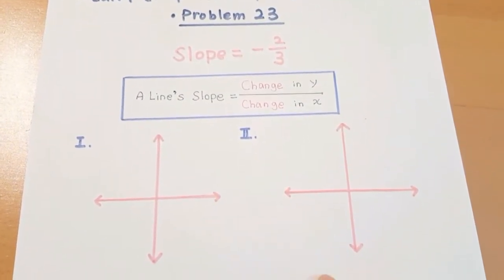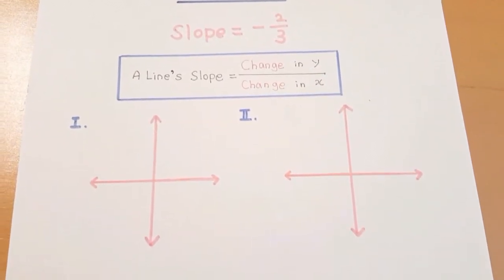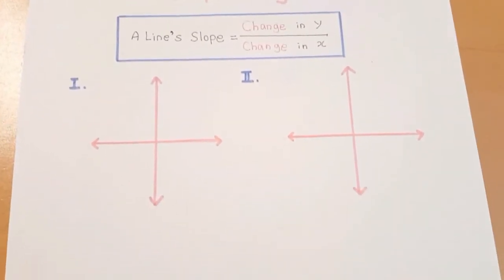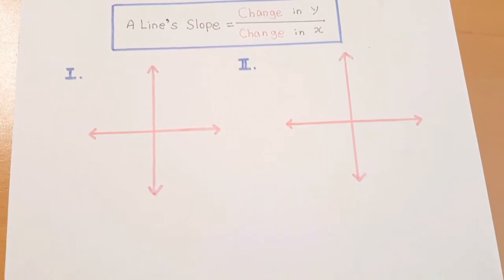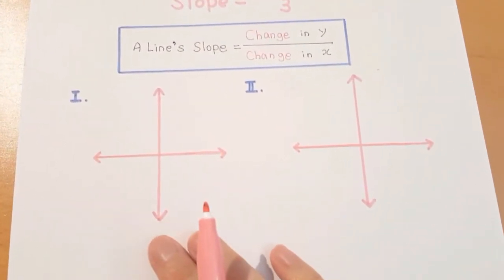When we talk about slope for a line in the plane, we usually have two types. Let's look at it from our XY coordinates.